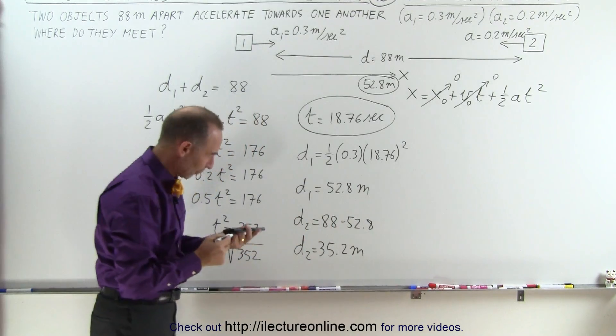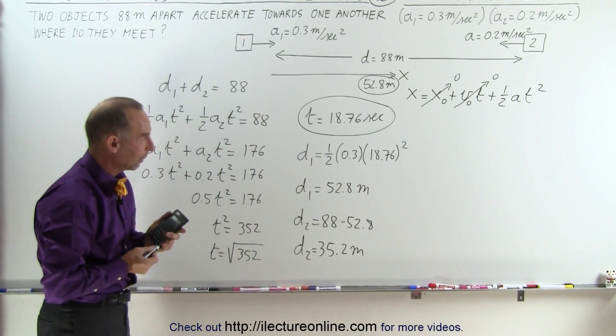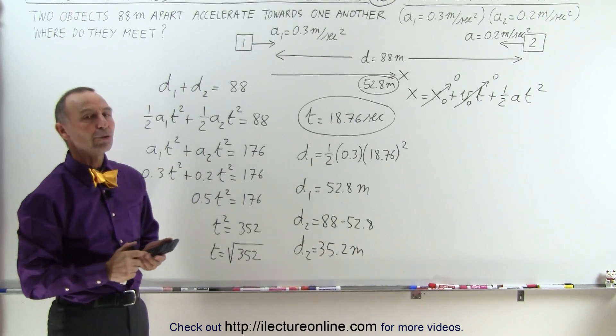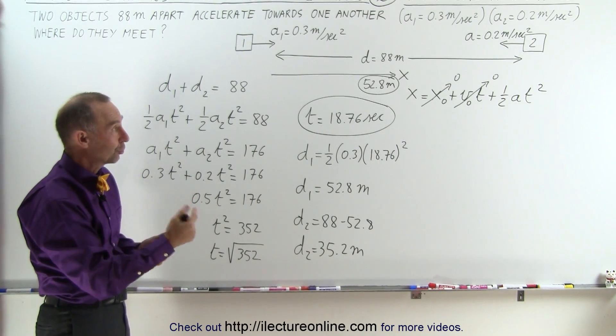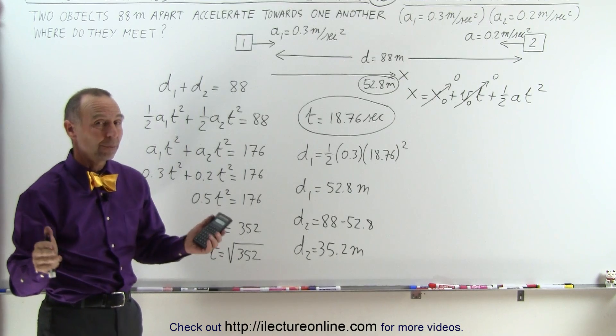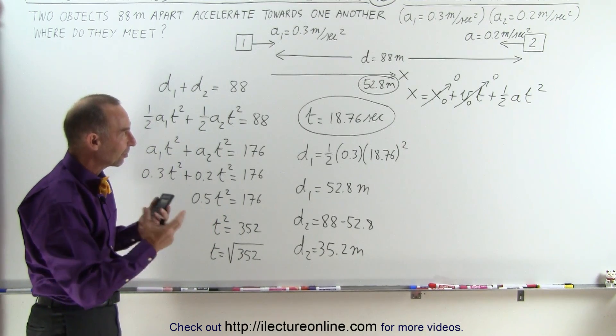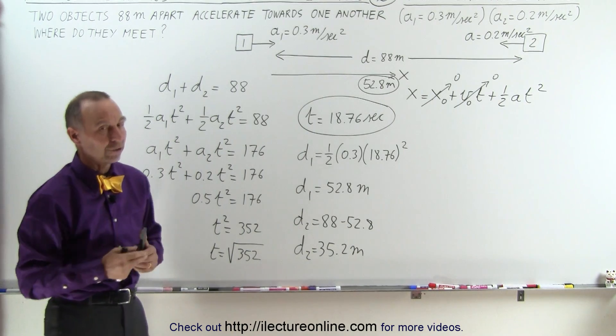You may wonder, why didn't I use a negative 0.2 for the acceleration of object 2 since it's to the left? But if we're only talking about the magnitude of acceleration, we don't have to worry about the negative signs. We can simply calculate the distance regardless which direction we're traveling, and that's how it's done.